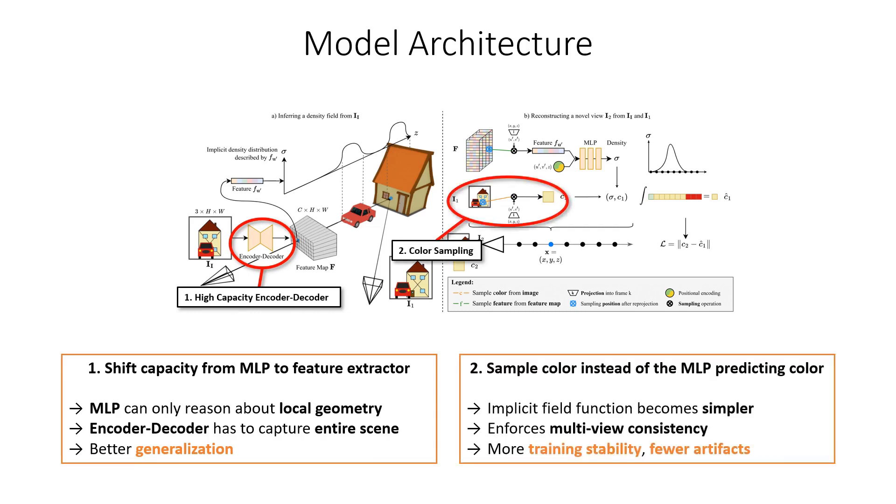Second, by sampling color instead of having the MLP predict color, the implicit function MLP has to model becomes significantly simpler. It therefore further boosts training stability and generalization.